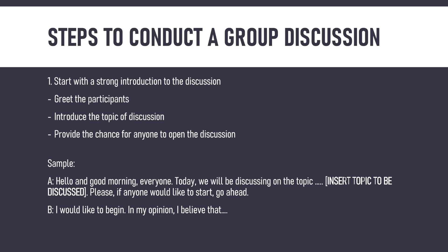So today we'll be discussing the topic of the best gifts for our loved ones. You then provide the chance: 'If anyone would like to start, go ahead — or if not, I will start.' Sample B is where you volunteer yourself to start: 'I would like to begin. In my opinion, I believe that...' — and you jump into the discussion. Your introduction doesn't have to be too formal; it can be quite casual depending on the topic. For heavier topics like social issues, try to be a bit more formal and organized.